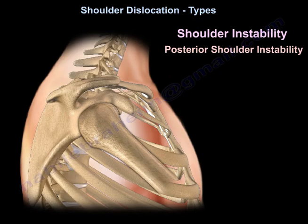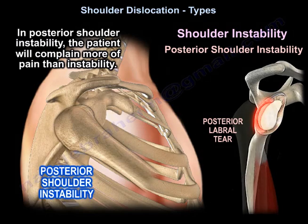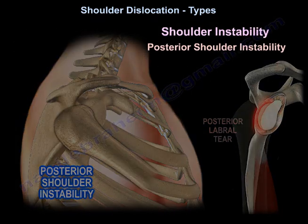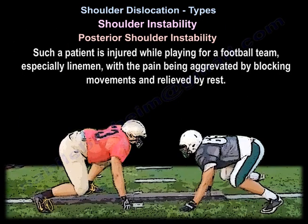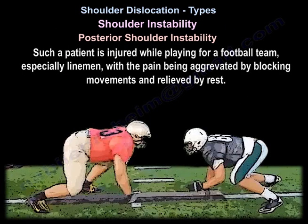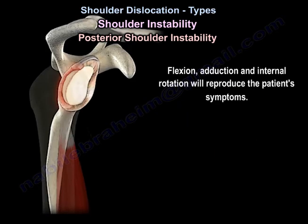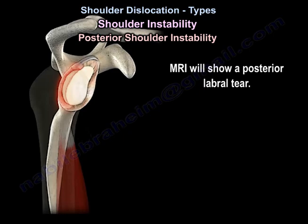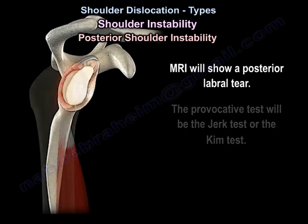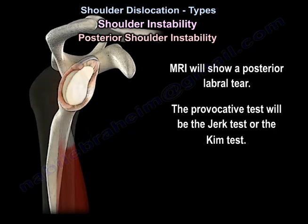In posterior instability, the patient will complain more of pain than instability. Such a patient is typically injured while playing football — especially as a lineman — with pain aggravated by blocking movements and relieved by rest. Flexion, adduction, and internal rotation reproduce the patient's symptoms. MRI will show a posterior labral tear, and the provocative tests will be the jerk test or Kim test.